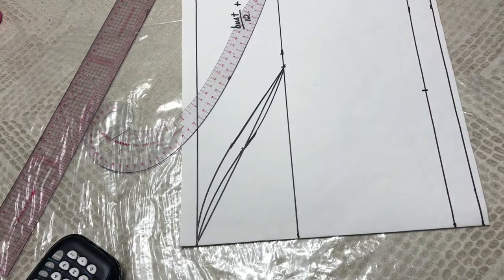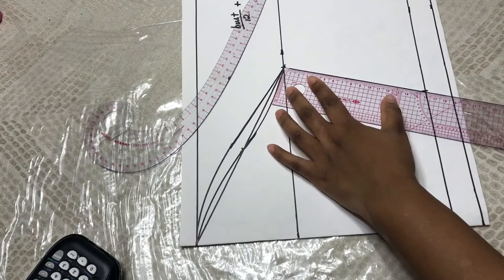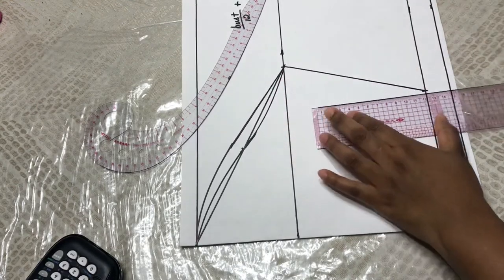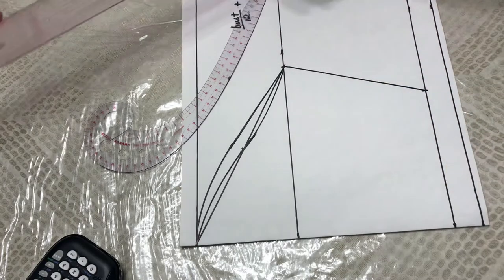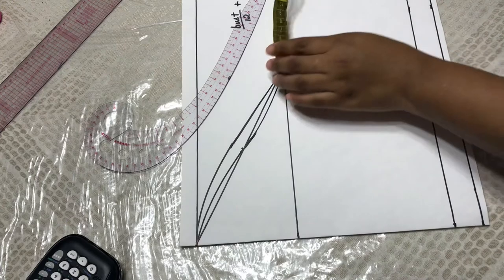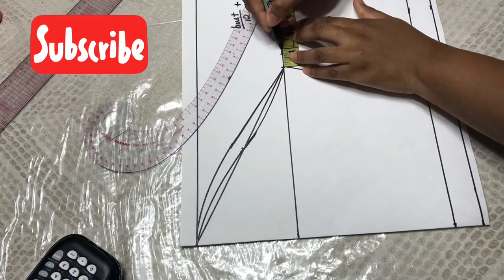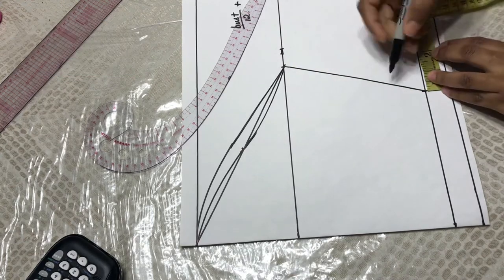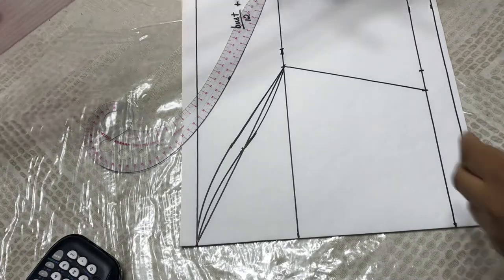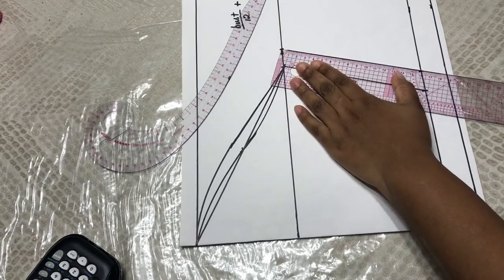And then I'm going to connect this point to my sleeve opening. But then on my pattern, I have added a 1 inch seam allowance, so I have to put that on my sleeve pattern. And I'm going to connect this.